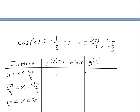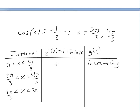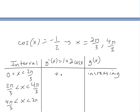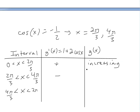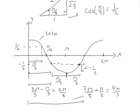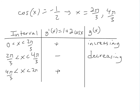So if the derivative is positive, the function is increasing on the first interval. In between the two critical points — from two pi over three to four pi over three — cos x is less than negative one over two, which means the derivative one plus two cos x is less than zero, so it's negative and the function is decreasing. Now when we look at the last interval from four pi over three to two pi, that's going to be the same as the beginning: cos x is greater than negative one over two, so the derivative is positive and the function is increasing.